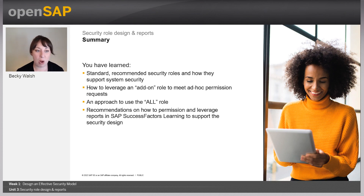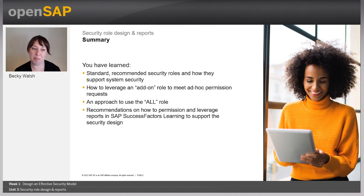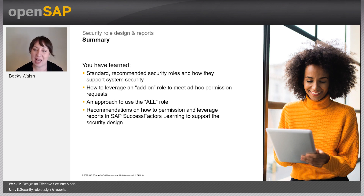As a recap of what we've talked about today: first, we talked about some standard security roles to use as a starting jumping-off point when designing your security roles. Second, we talked about the use of an add-on role — if someone needs permissions not in the base role but you don't want to create a whole new role, consider an add-on role. After that, we talked about the all role and things to consider when using and assigning it. Lastly, some recommendations on how to use reports in the system, ways to leverage them, and ways to restrict access to improve the user experience especially for newer customers. That's all I have for you today. Thank you so much, good luck on the quiz, and I will see you in another unit.